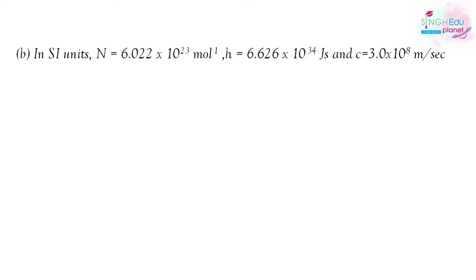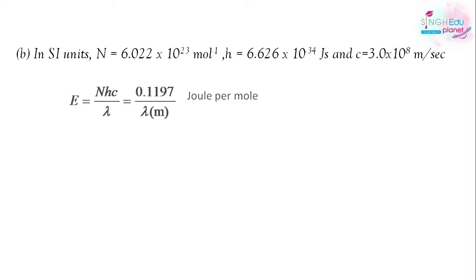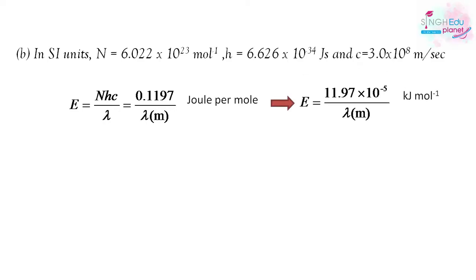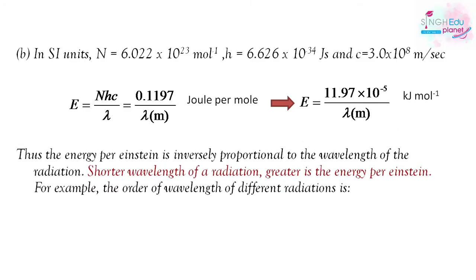In SI units, H = 6.626 × 10⁻³⁴ J·s and C = 3.0 × 10⁸ m/s. Putting all the values in, we get E = 0.1197 J per mole. In kilojoules per mole, we can write E = 11.97 × 10⁻⁵/λ kilojoules per mole, where λ is in meters.